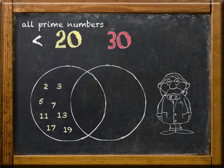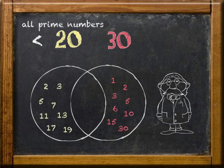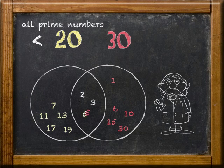The factors of 30 include 1, 2, 3, 5, 6, 10, 15, and 30. As you can see, the common factors are 2, 3, and 5.